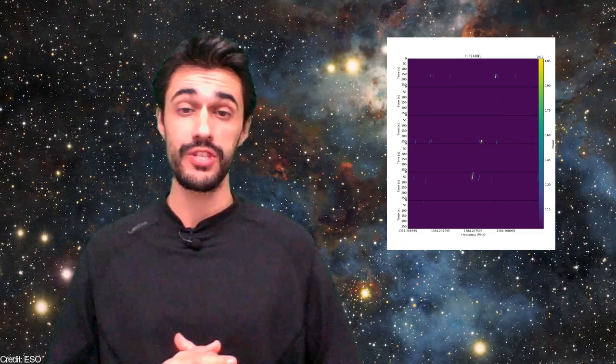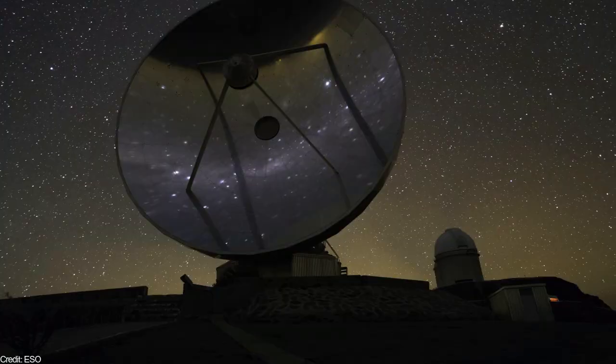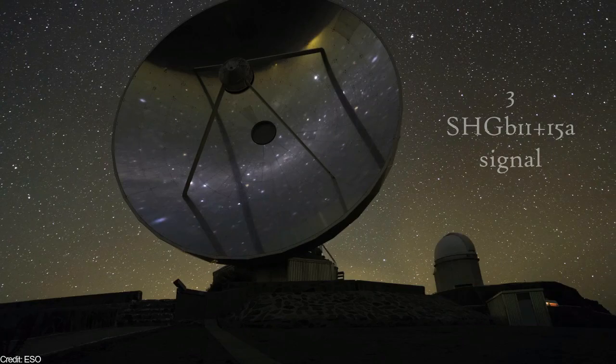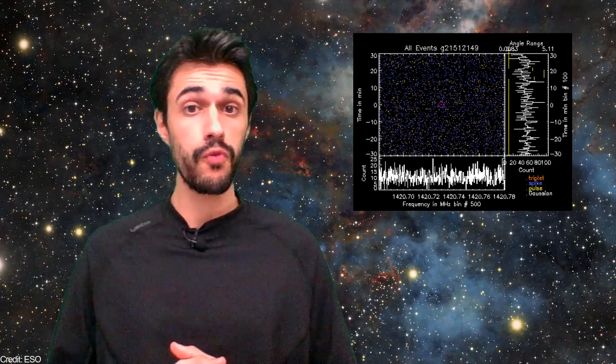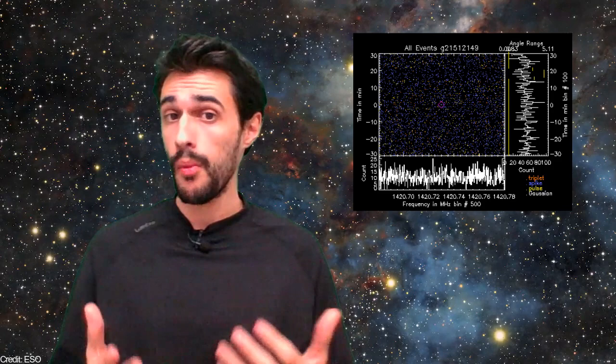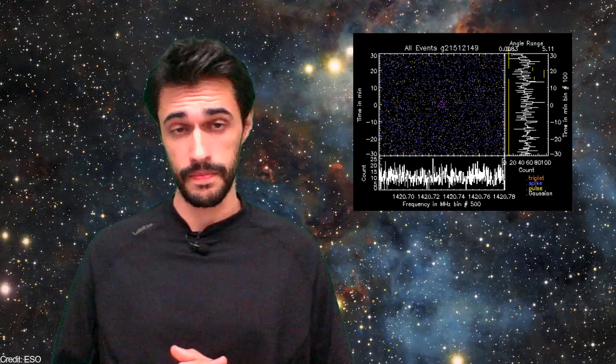The signal had a frequency of 1384 megahertz. It is often said that SHGb02+14a is the most promising radio signal detected through SETI@home. However, there have been other candidate signals more significant. For example, SHGb11+15a was detected by three different users of the project.